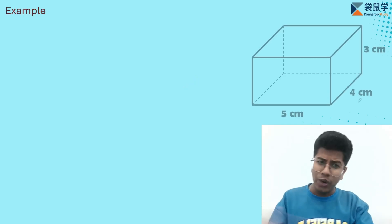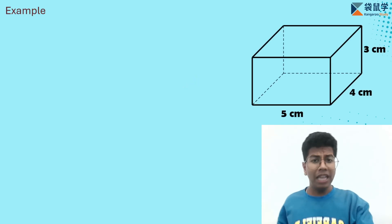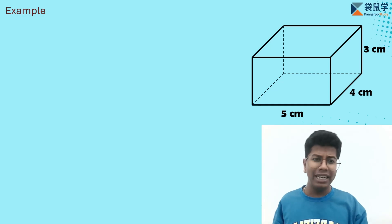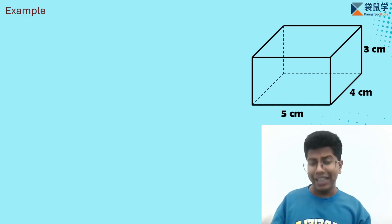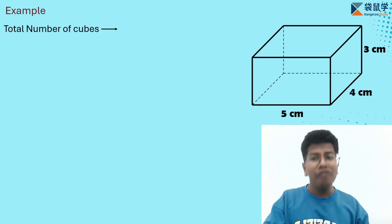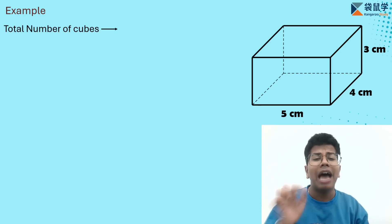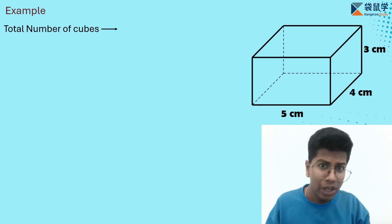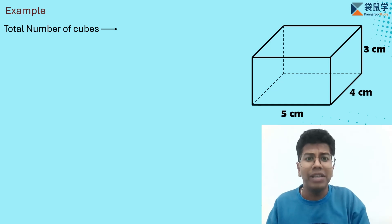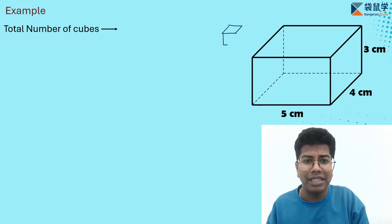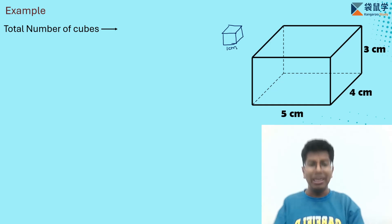Let's say I have a cuboid with dimensions of 5 centimeters, 4 centimeters, and a height of 3 centimeters. The first question is: how many total cubes are present inside this cuboid? To calculate the total number of cubes, I first have to understand the size of each cube. I want to calculate how many cubes with a side length of 1 centimeter are present.